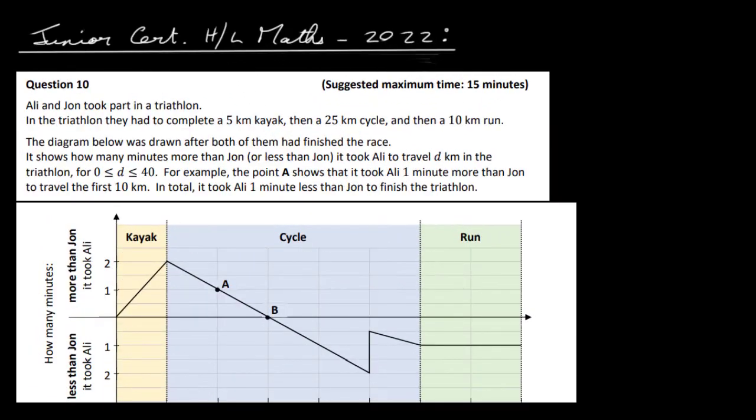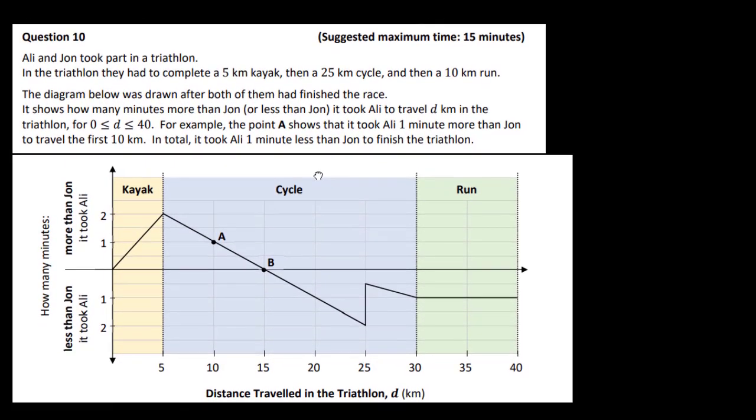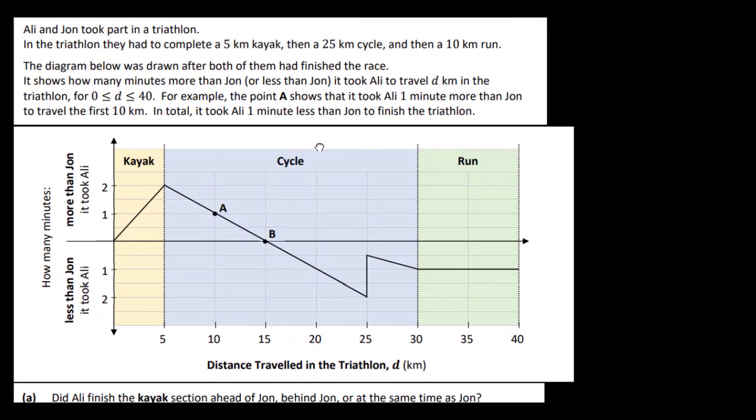OK, so this is the Junior Certificate Level Maths 2022, questions 10, 11 and 12. Now Ali and John took part in a triathlon. In the triathlon they had to complete a 5km kayak, so that's this part here, 25km cycle, so that's from here to 30, and then a 10km run, so that's from 30 to 40 here.